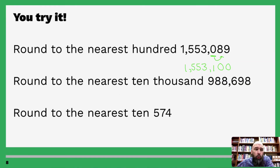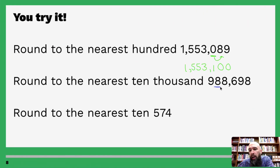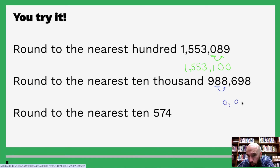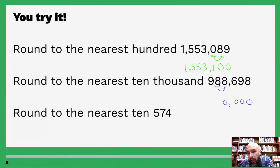Round to the nearest ten-thousand — ones, tens, hundreds, thousands, ten-thousands. Underline eight, go to the right — five or above, give it a shove! So we put one, two, three, four zeros. Since this is five or above, eight turns into nine, and then that nine comes along for the ride.